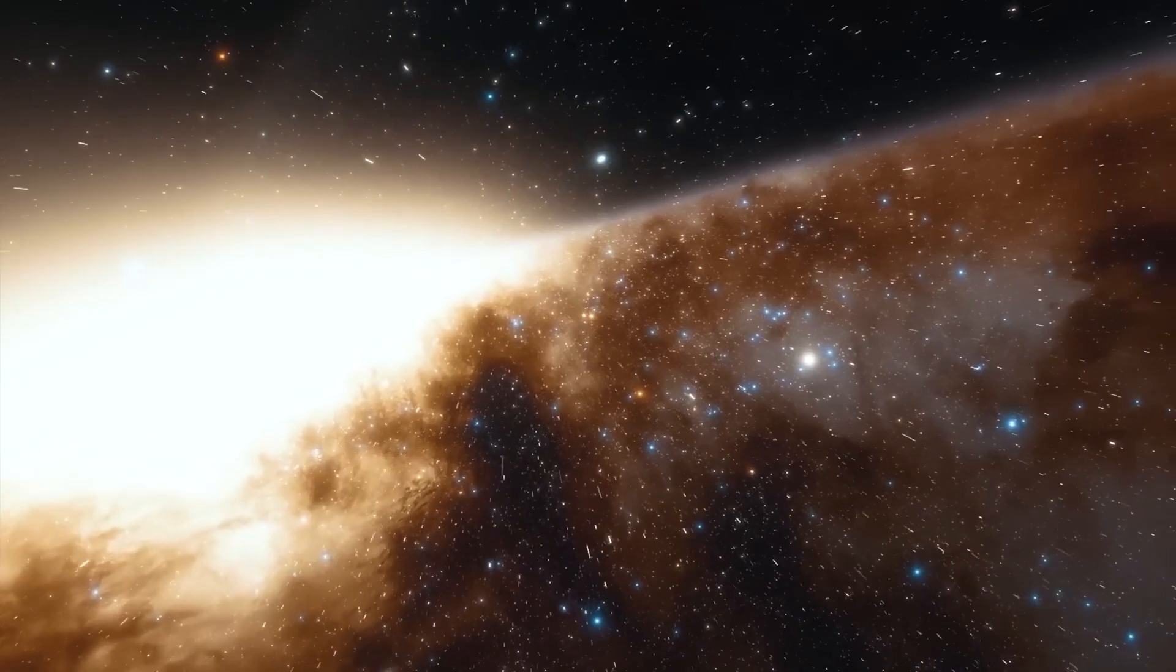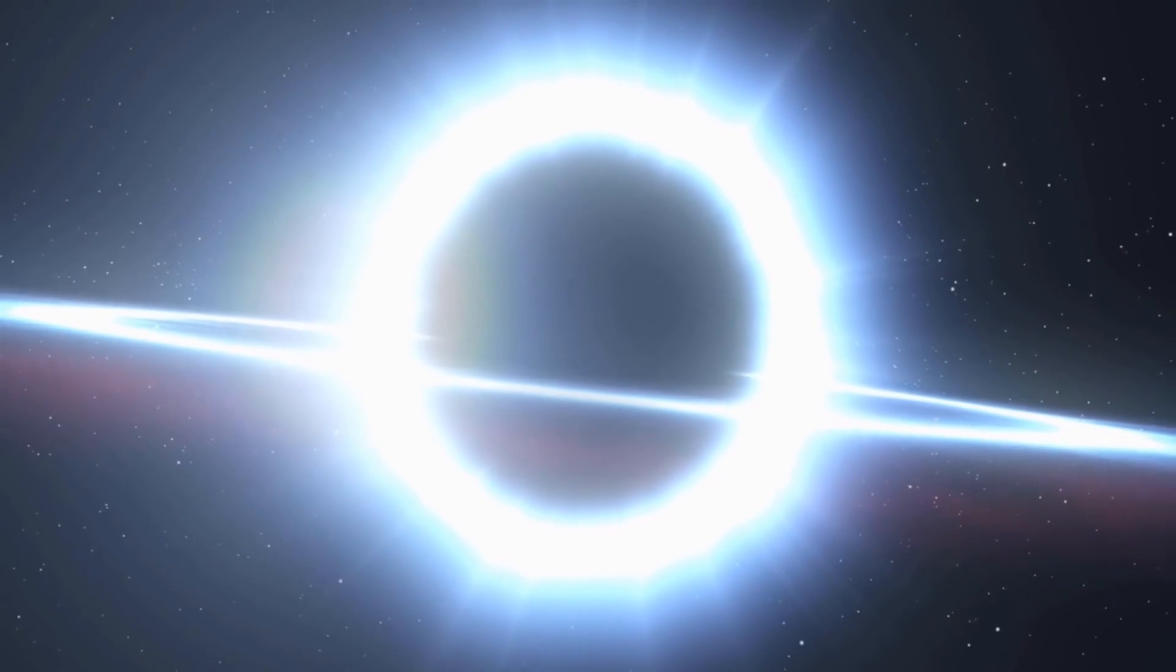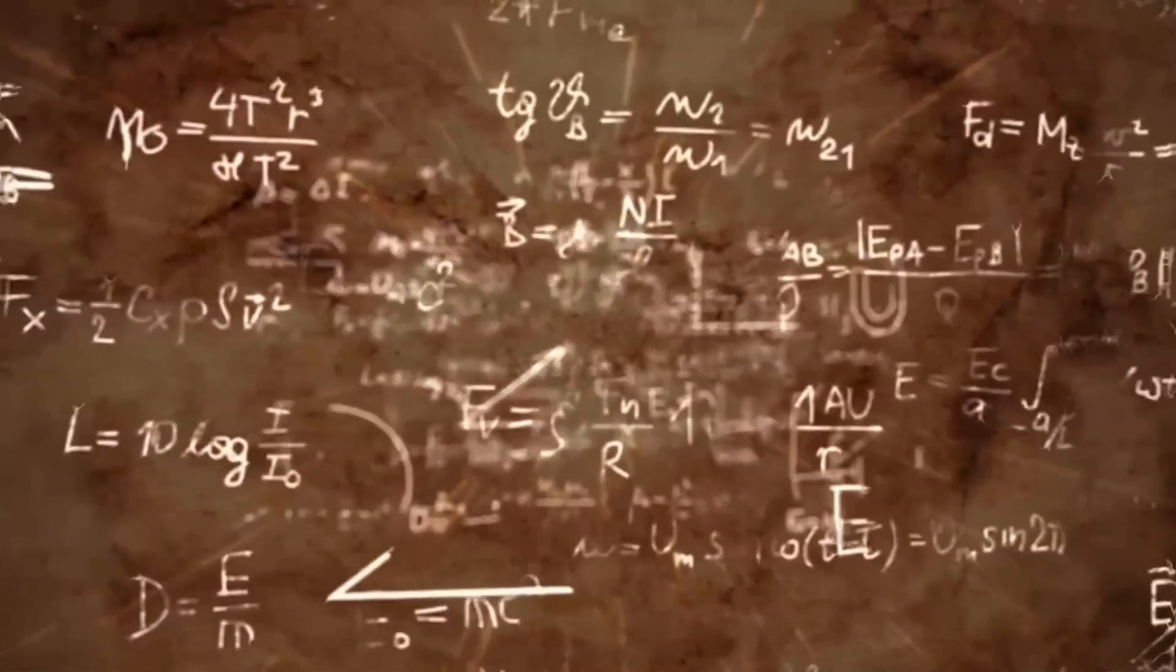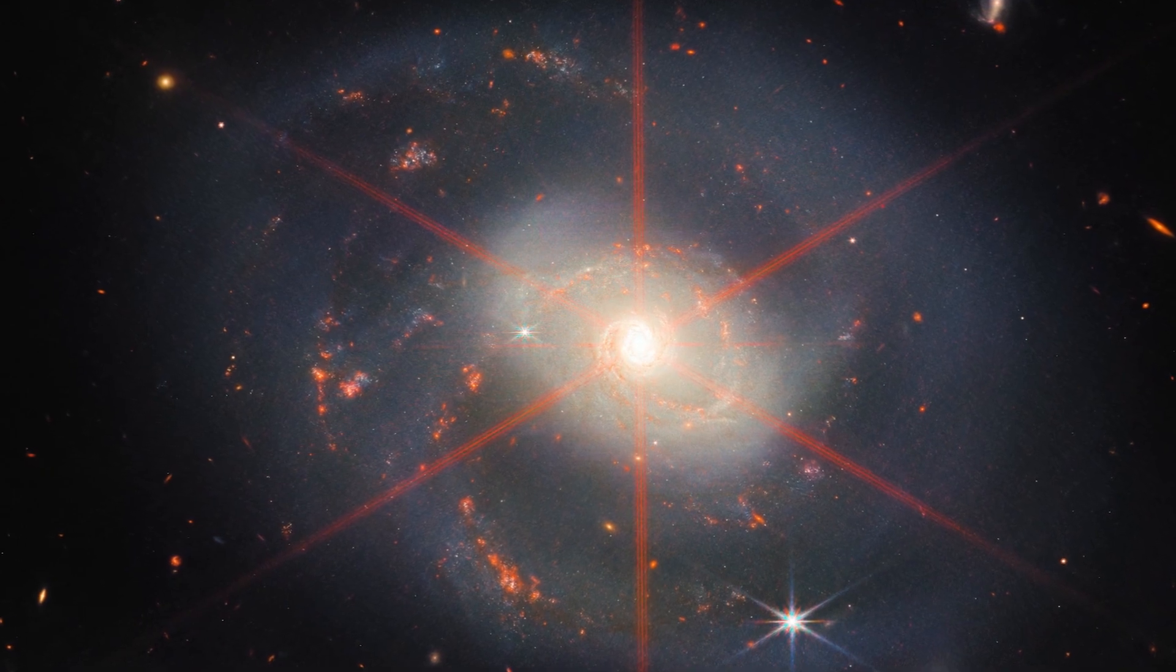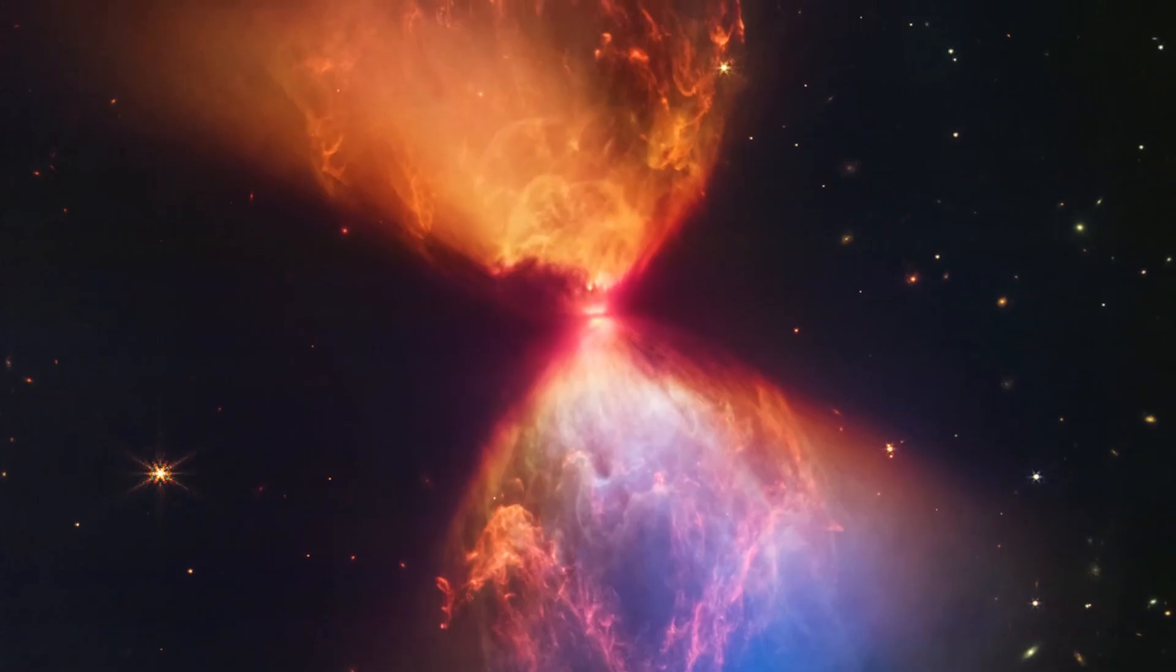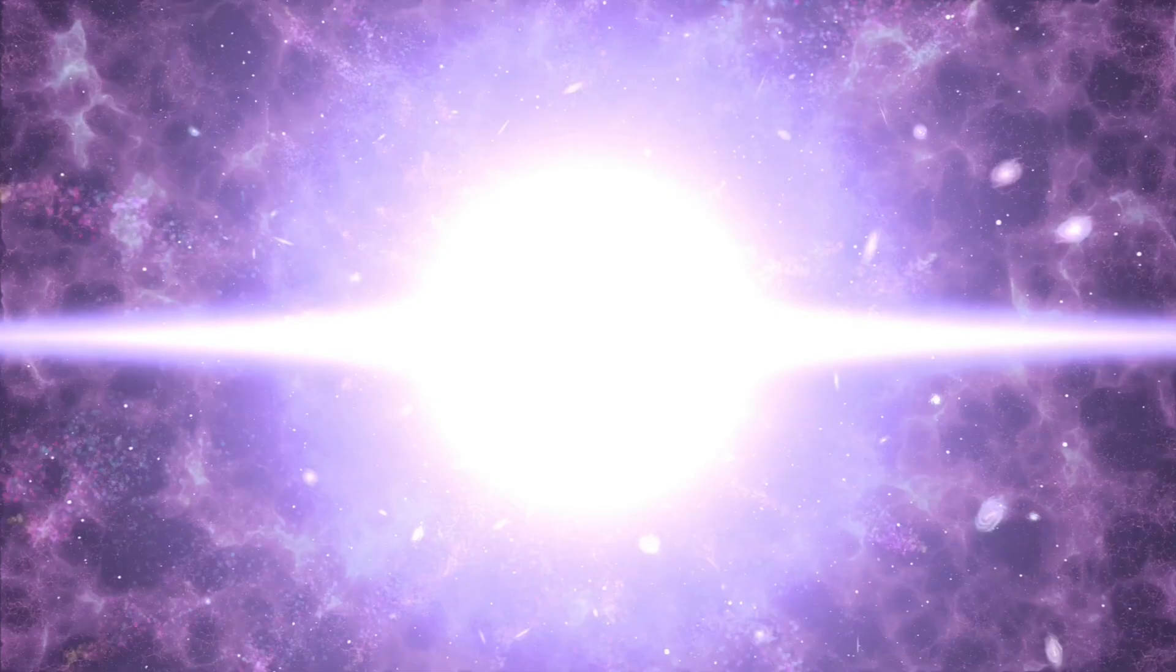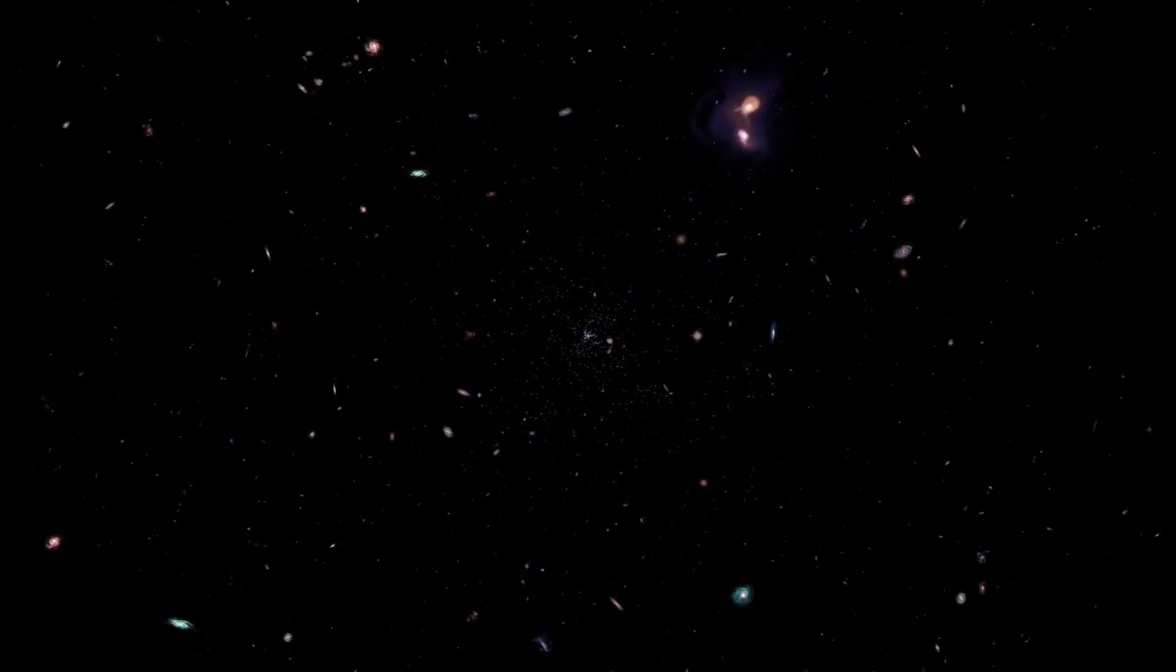Moreover, the smoothness of these galaxies is totally unexpected. According to the Big Bang Theory, galaxies should show irregularities and variations in their structures due to the dynamics of their formation and evolution. However, the images reveal unusually smooth galaxies without the level of complexity and roughness that one would normally expect to see in galaxies of their age. This defies the expected time sequence for the formation and evolution of galaxies within the framework of the Big Bang Theory.